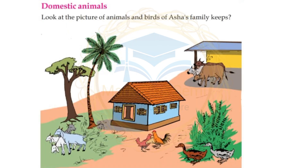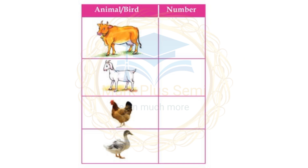Domestic Animals: Look at the picture of animals and birds that Asha's family keeps. How many goats are there? 1, 2, 3 goats.